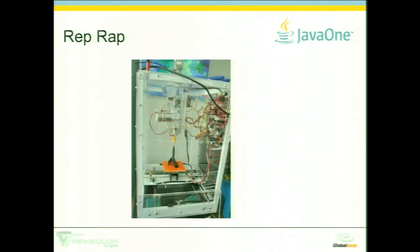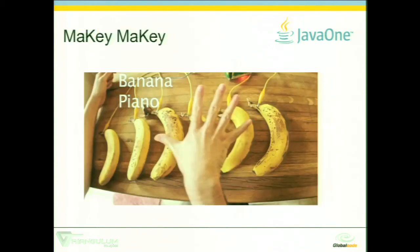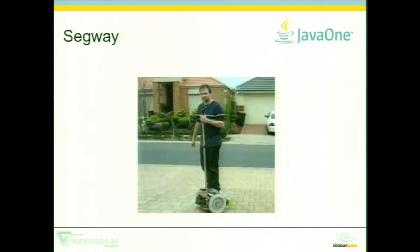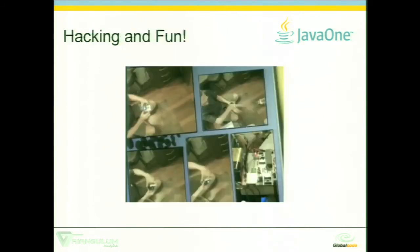Some examples: RepRap is a very famous 3D printer. Makey Makey — I'll be using it tomorrow in another talk; I'm going to use a banana to change my slides. That's part of the Internet of Things — a banana can be part of the internet. There's also the open source Segway that you can build by yourself for less than half the price — about $2,000. Hacking and having fun with open source hardware is the most important part.